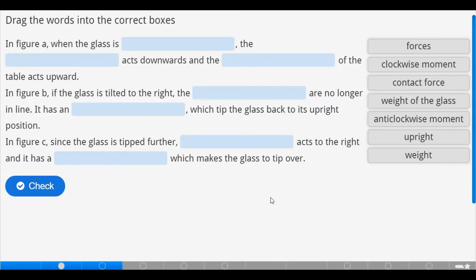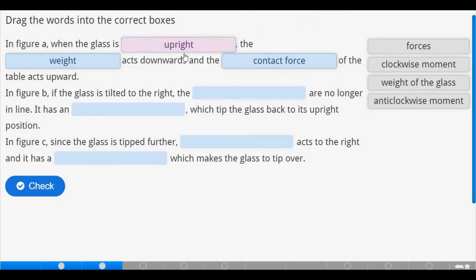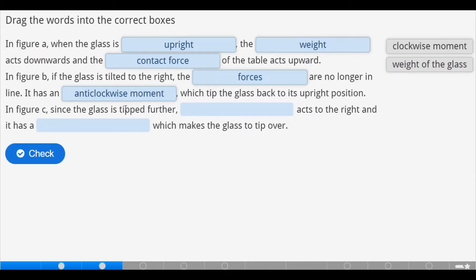So we are to drag the following words into the correct boxes for us to be able to have a full definition of those particular observations. In figure A when the glass is upright, the weight acts downwards and the contact force of the table acts upwards. In figure B, if the glass is tilted to the right, the forces are no longer in line. It has an anticlockwise moment which tips the glass back to its upright position.